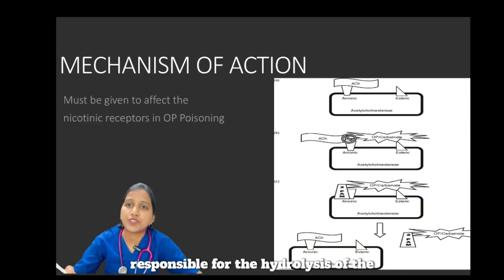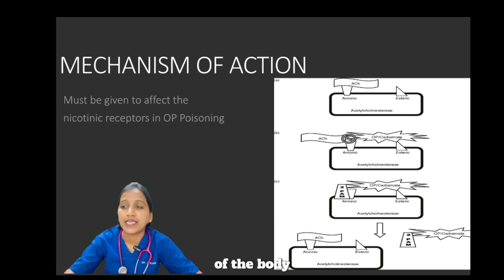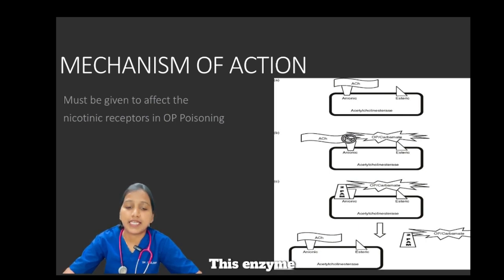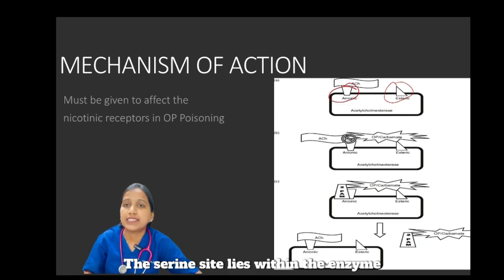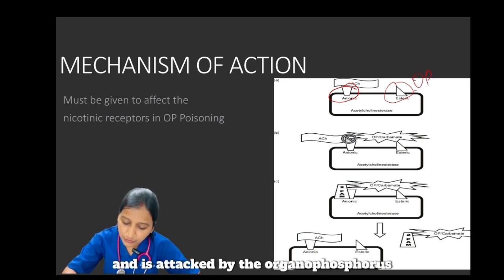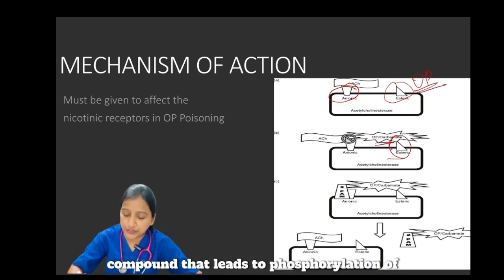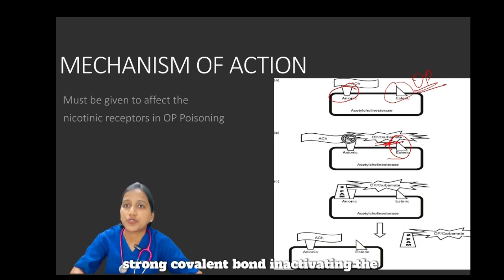The acetylcholinesterase enzyme is responsible for the hydrolysis of the neurotransmitter acetylcholine at various nicotinic and muscarinic sites of the body, preventing its accumulation. This enzyme has a serine site and an anionic site. The serine site lies within the enzyme's active site and is attacked by the organophosphorus compound, leading to phosphorylation of the serine site and formation of a strong covalent bond, inactivating the active site.